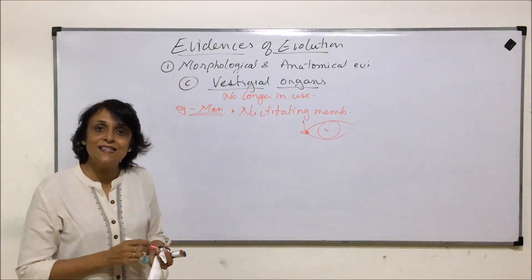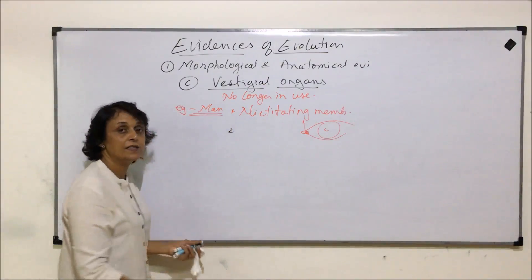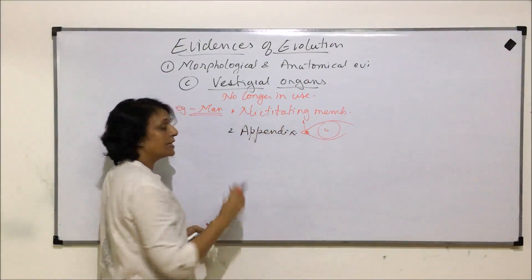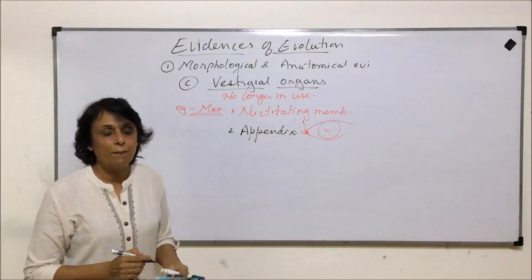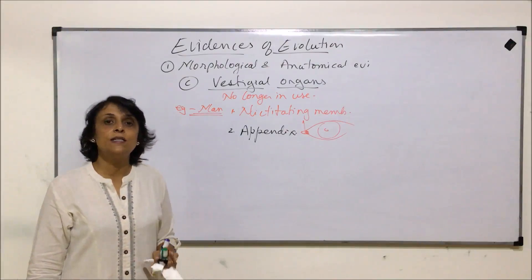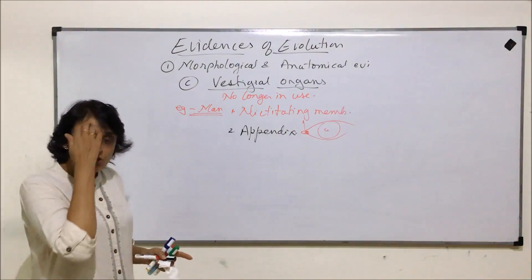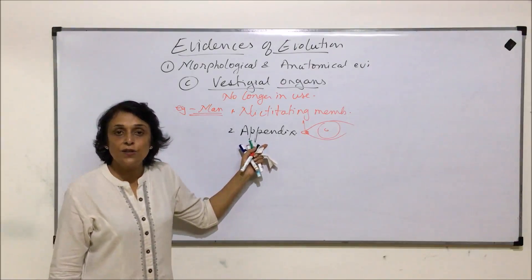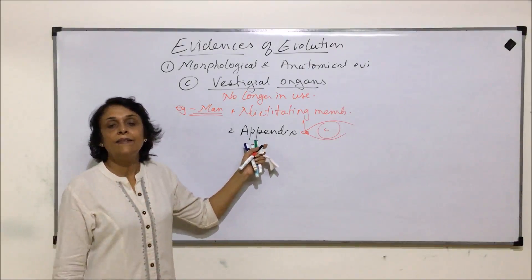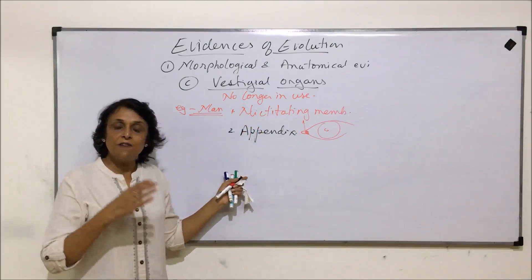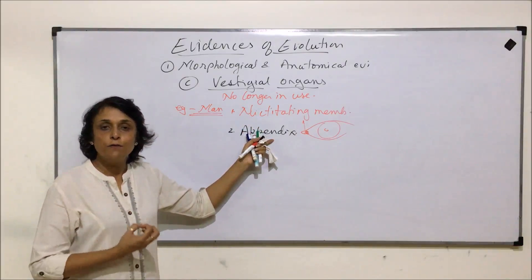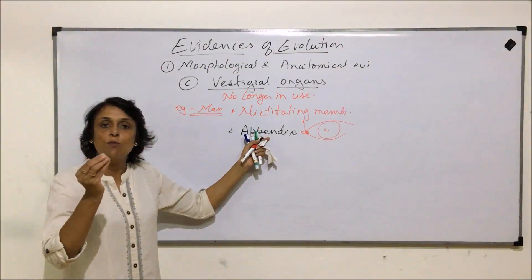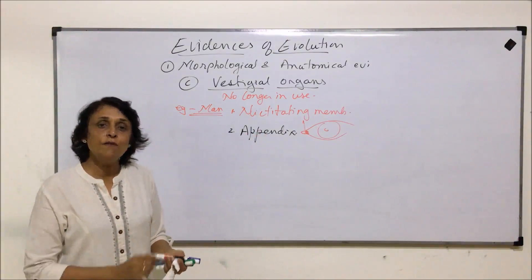Another vestigial organ is the appendix or vermiform appendix. It is considered a remnant of the cecum, and in other organisms the cecum is where cellulose digestion takes place. The presence of this small finger-like structure indicates our ancestors had a functional cecum and could consume cellulose. As our food habits changed and we could no longer digest cellulose, this structure became smaller and smaller and is now present as a vestigial structure.